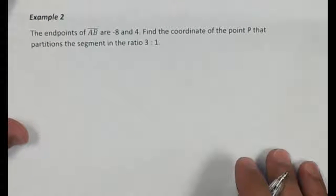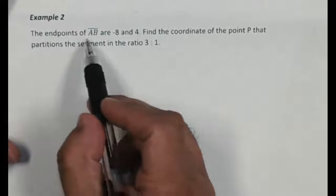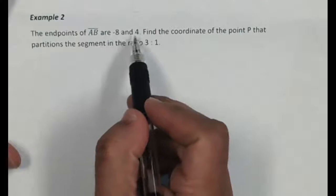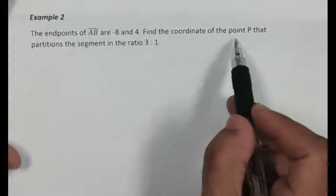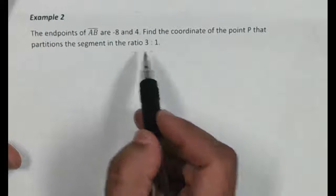All right, so here's now another example for us to look at. The endpoints of segment AB, this time we're at negative 8 and 4. We want to find the coordinate of point P that partitions the segment in a 3 to 1 ratio.